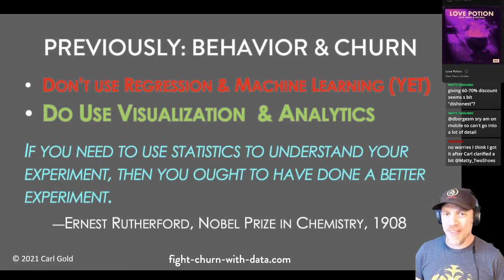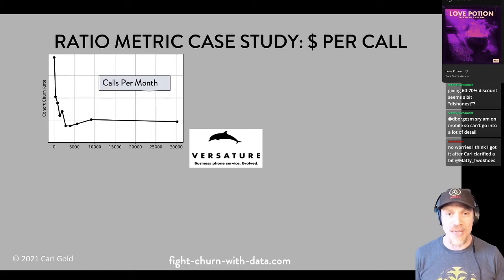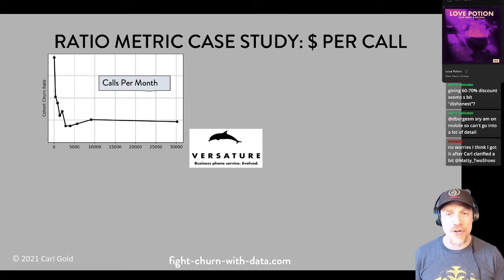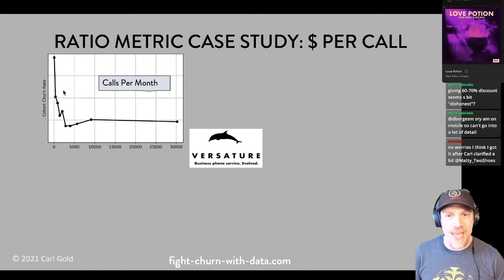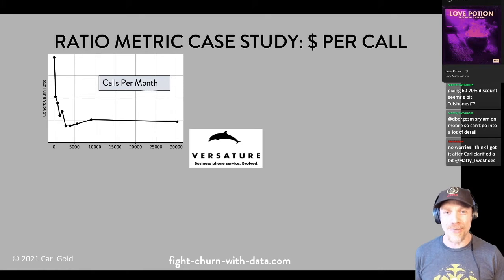Here's a case study for a company called Versature, a voice-over-IP business phone service operating in Canada. This chart shows the churn rate versus the number of calls a Versature customer makes each month. I call it a metric cohort chart because I group the customers into cohorts based on the metric — the bottom cohort is the bottom decile (10%), and the top cohort is the top 10%.